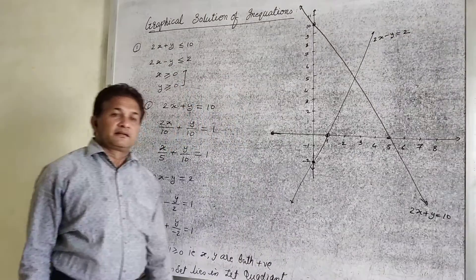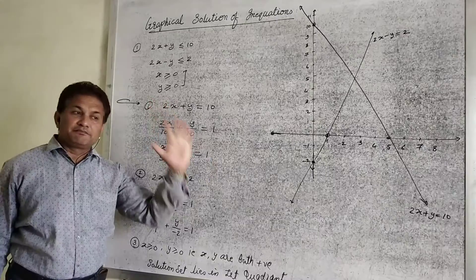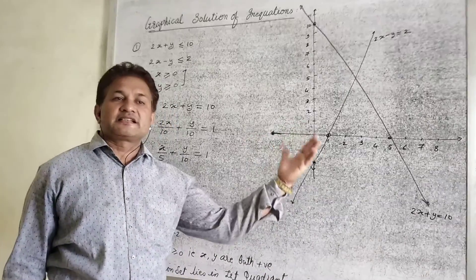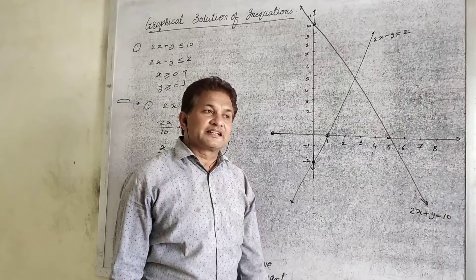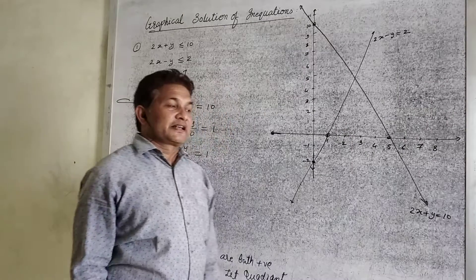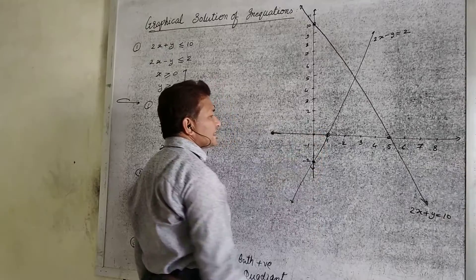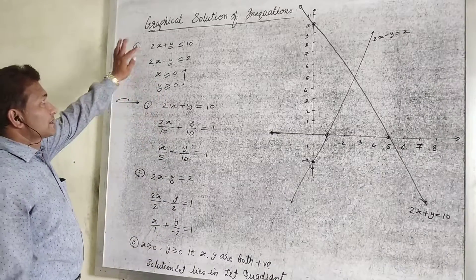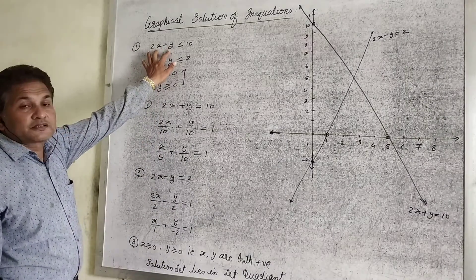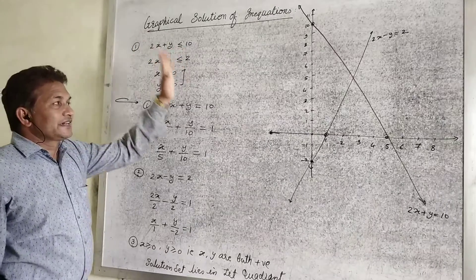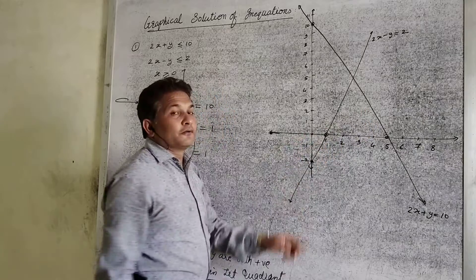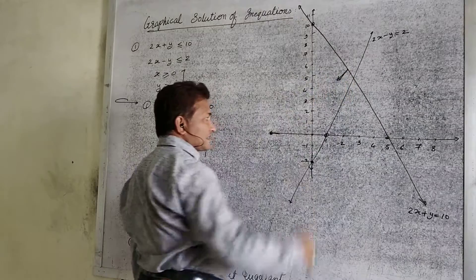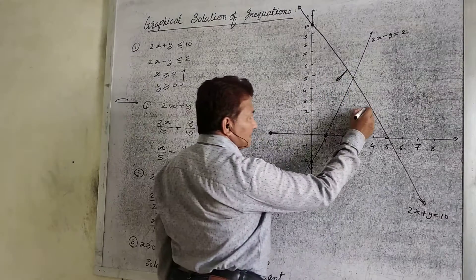Now find the solution set. We learned previously: if the origin satisfies the condition, then the solution set lies on the origin side. If the origin does not satisfy the condition, then the solution lies in the opposite direction. Check for the first condition. Substituting origin: x is 0, y is 0, so we get 0 plus 0 equal to 0, which is less than 10. Origin satisfies. Hence the solution set lies on the origin side — below the first line.